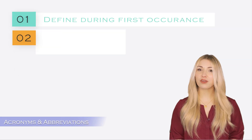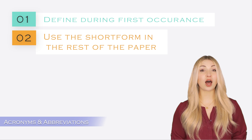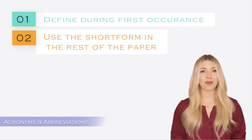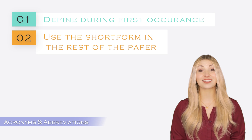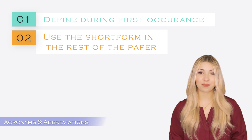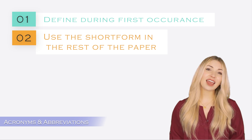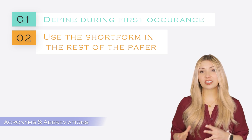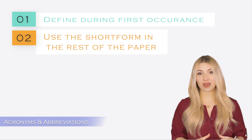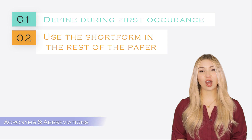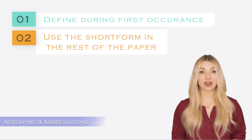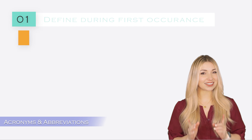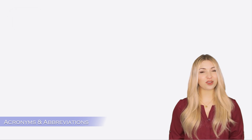Try to use acronyms and abbreviations for long method names. Abbreviations and acronyms are a great way to make your writing concise and save time. Define the acronyms and abbreviations during their first occurrence, then use the short form in the rest of the text. The common practice is to put the acronym and abbreviations in parentheses after the full term.